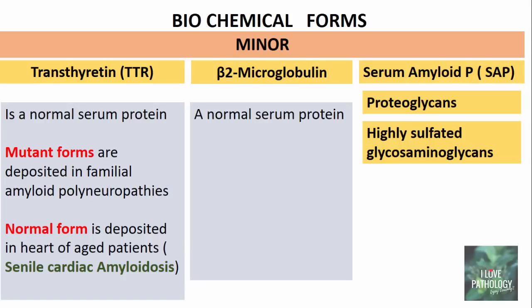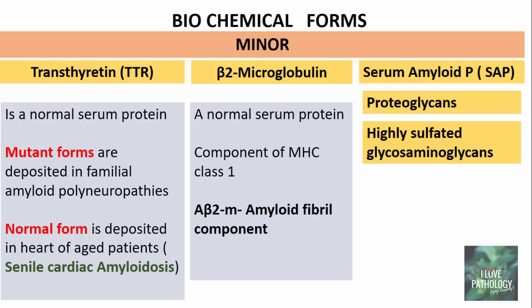Beta-2 microglobulin is also a normal serum protein — it is a component of the MHC class 1 molecule and is present in all nucleated cells. The amyloid fibril component of beta-2 microglobulin is called A-beta-2-M. This type of protein is found in patients with chronic renal failure who are on long-term hemodialysis, in whom A-beta-2-M can aggregate to form amyloid deposits. The other minor forms are serum amyloid P, proteoglycans, and highly sulfated glycosaminoglycans.